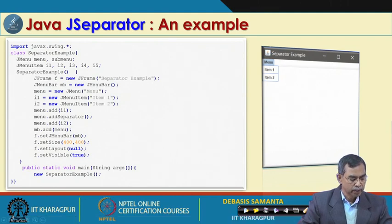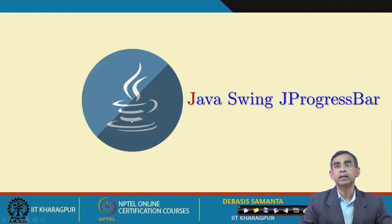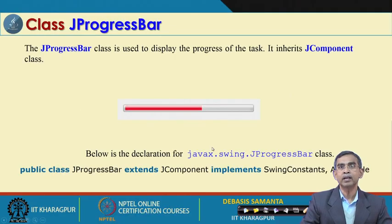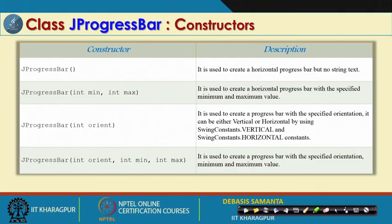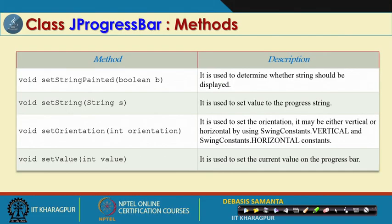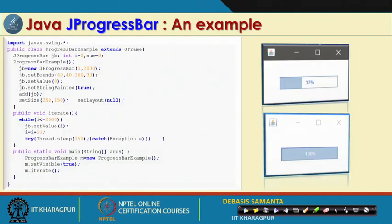JProgressBar is something we are familiar with — whenever you are downloading or saving a file or copying from one source to another, a progress bar shows how much percentage has been completed. The progress bar is a dynamic component. In your Java program you can also include a progress bar. There are 4 constructors and some methods by which different information about the progress bar can be extracted.